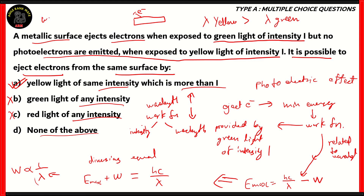By the way, the work function energy is dependent on the metal itself. So if you have a different metal, the work function would be different, and the required intensity for every wavelength of light would also differ. Therefore, option A — yellow light of intensity more than I — is the right answer for this question.